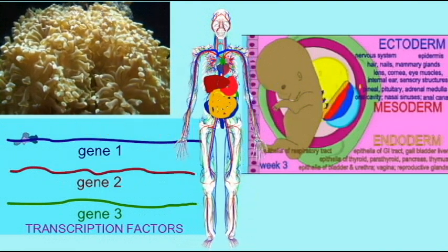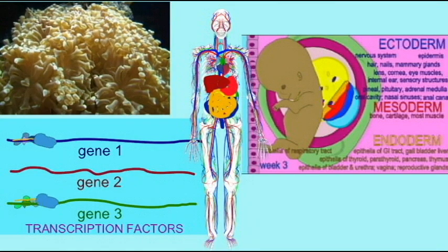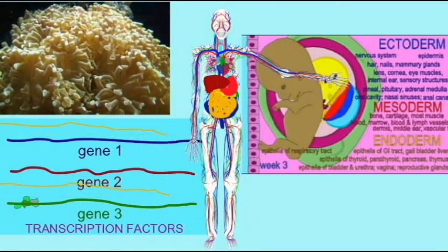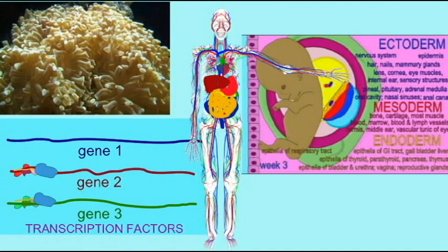And so, one of the great advances in the metazoan animals was differentiation. So, cells could specialize and be different from each other.